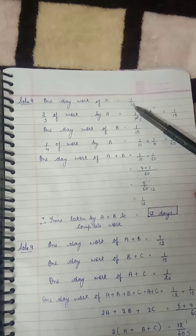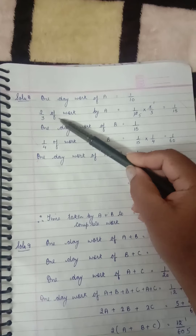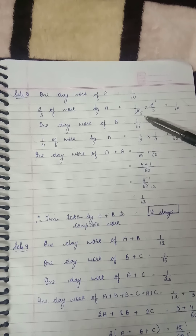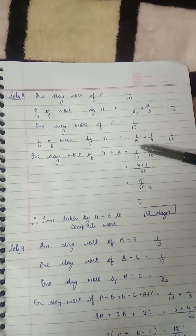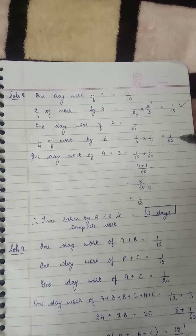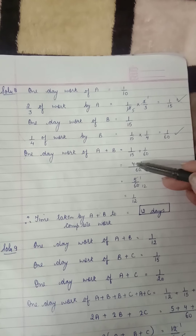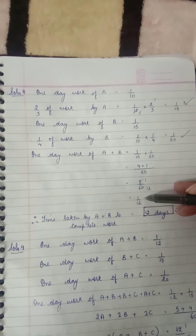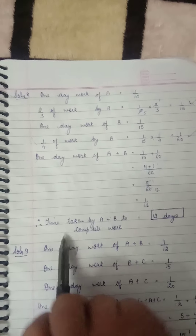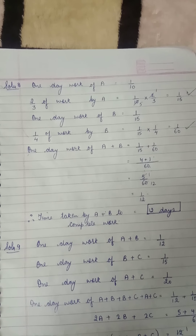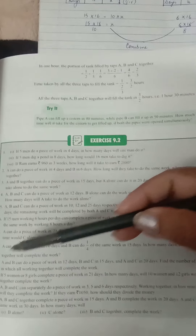One day work of A is 1/10, but A is completing 2/3 part of the work, so that will be 1/10 into 2/3, which becomes 1/15. One day work of B is 1/15, and B is completing 1/4 part of the work, that is 1/15 into 1/4, which comes as 1/60. They are working together, so one day work of A plus B is 1/15 plus 1/60. LCM is 60, giving 4 plus 1 in the numerator — that's 5/60, which reduces to 1/12. Finally, the time taken by A plus B to complete the work is 12 days.